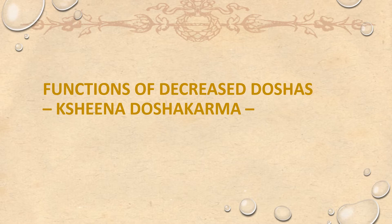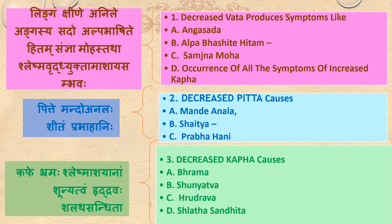Functions of decreased Doshas — Cheena Doshas Karma. Decrease of Vata produces symptoms like Angasada (debility of body parts), Alpa Bhashita (decreased speech), Hridam, Sapna Moha, and occurrence of all the symptoms of increased Kapha.